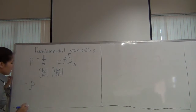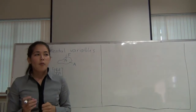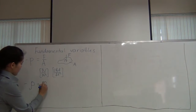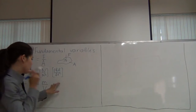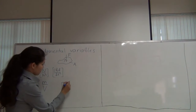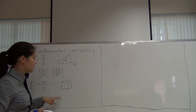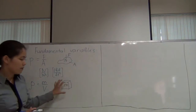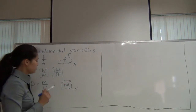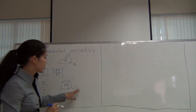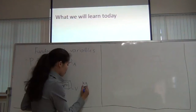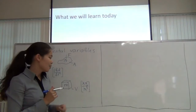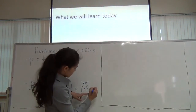The next variable is density. Density is how much substance you have in a unit volume, so density equals mass divided by volume. If you have a unit volume like a cube, the density of the substance inside equals the mass of the substance divided by the volume. Density is measured in kilograms per meter cubed, or in English units, slugs per feet cubed.